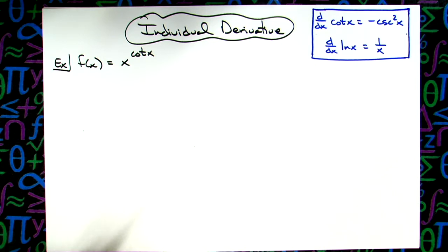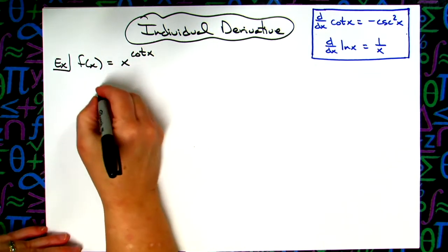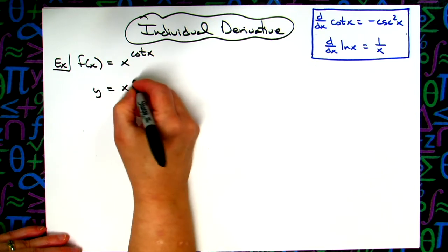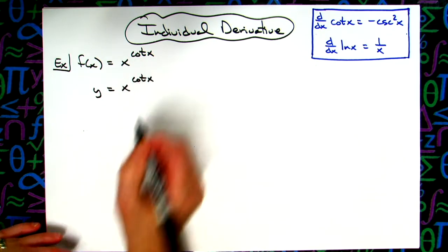The first thing I'm going to do is replace f(x) with y. So my function is y = x^(cot x).